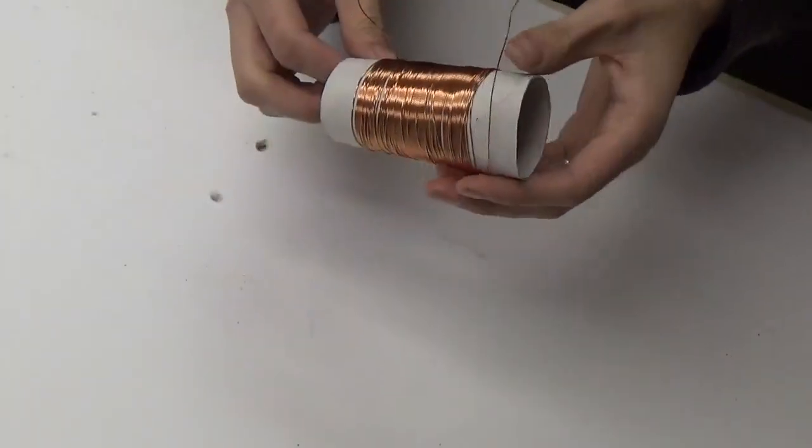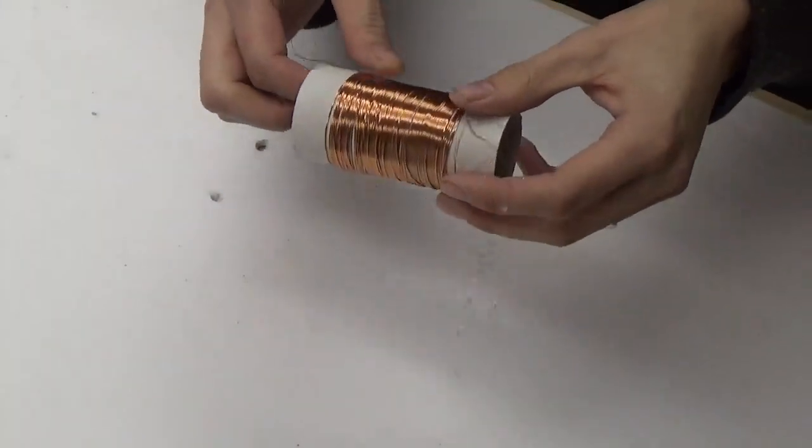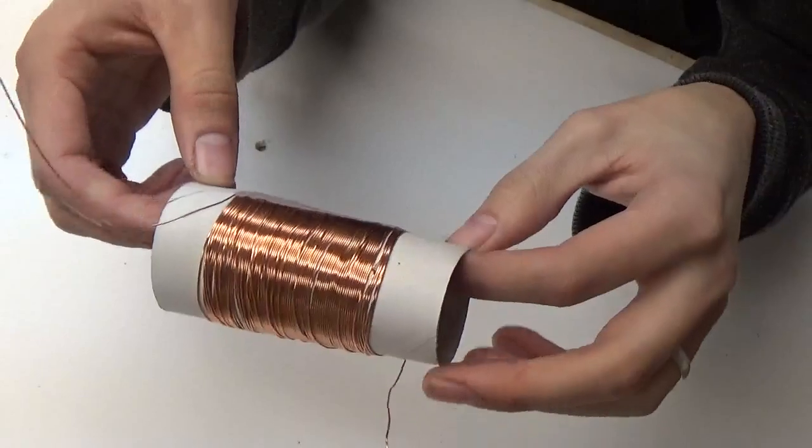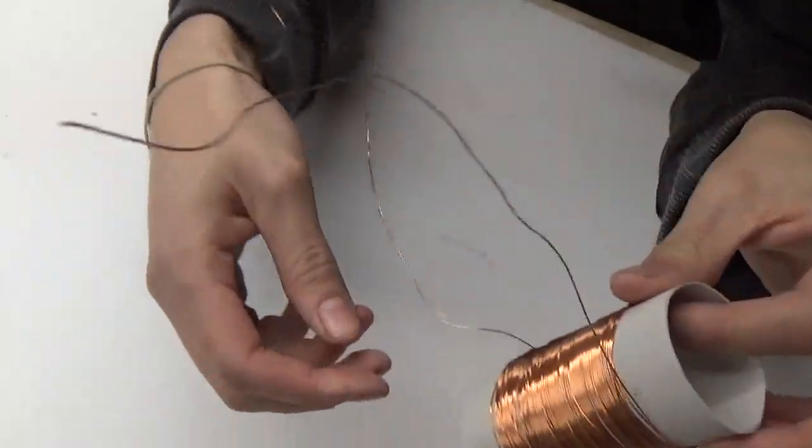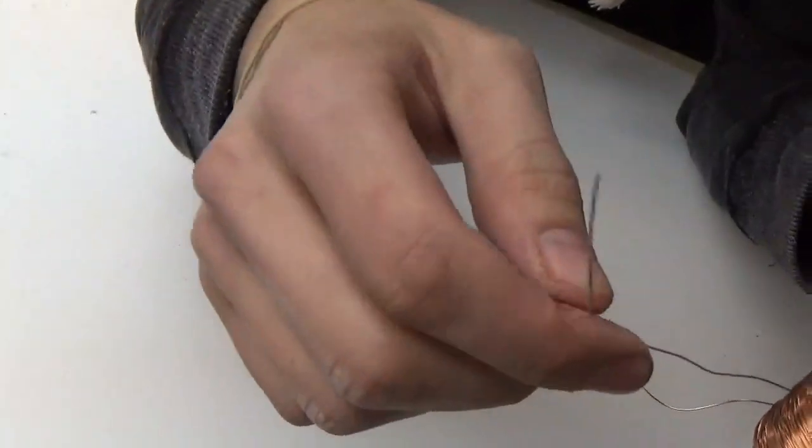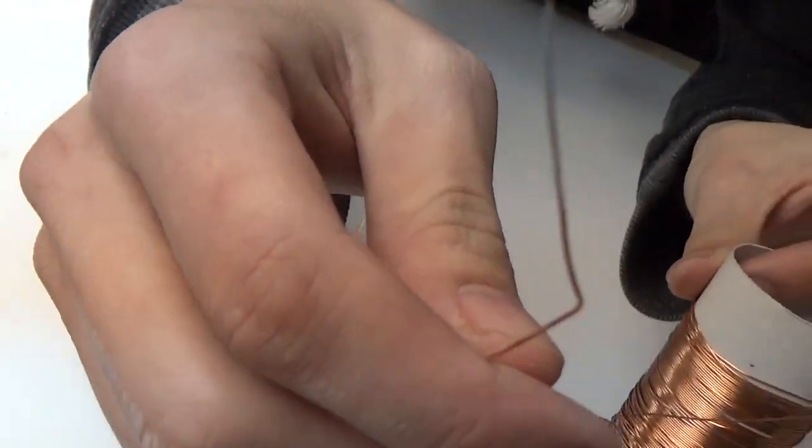What's up guys, today we're going to build a radio. First, get a toilet paper roll and wrap magnet wire around it about a hundred times, leaving the ends open. Then sandpaper down the ends about an inch to expose the silver on each side.